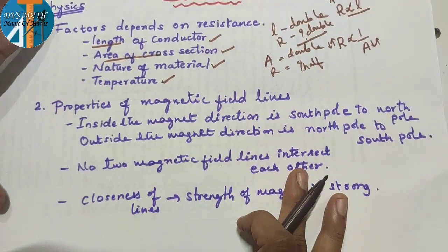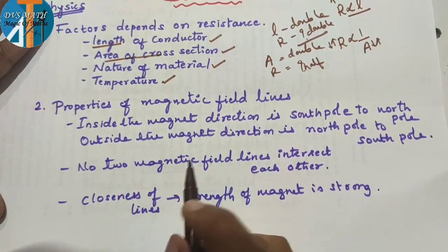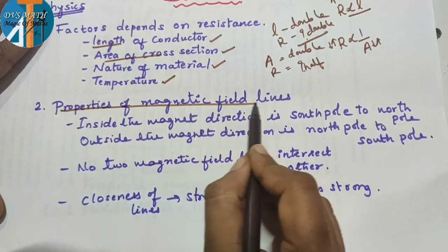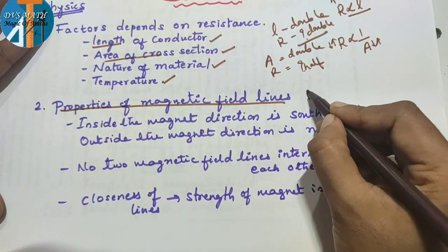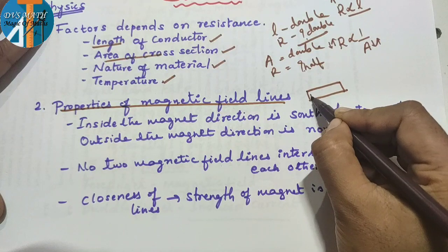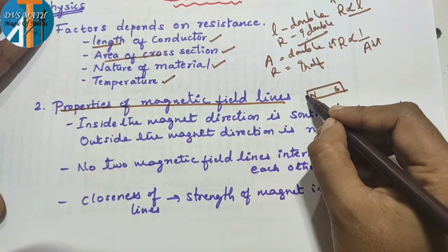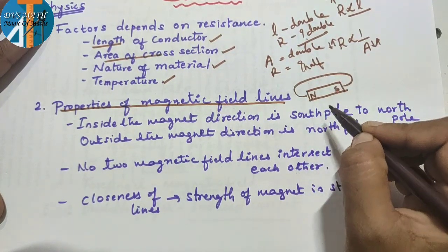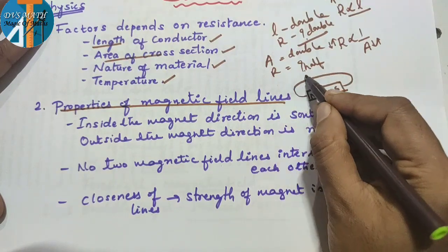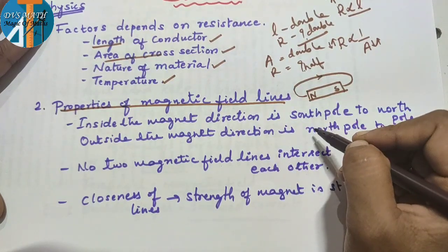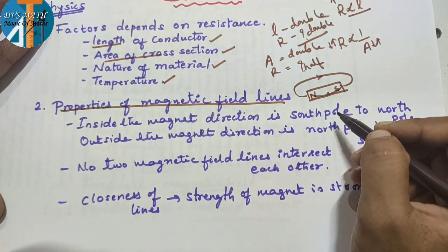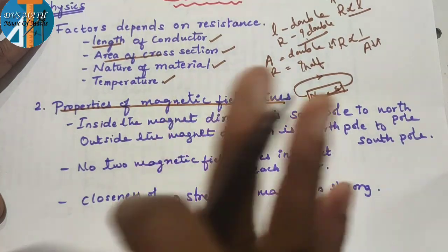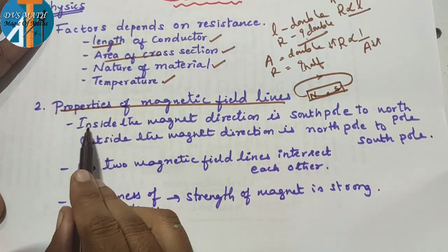Next level: magnetic effects of electric current. Properties of magnetic field lines. It is very simple. Consider a bar magnet with north pole and south pole. Outside the magnet, direction of magnetic field lines is from north to south. Inside the magnet, direction is from south to north.